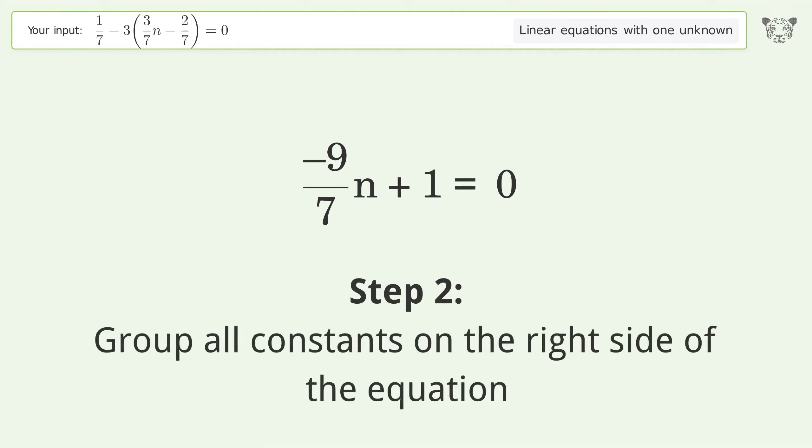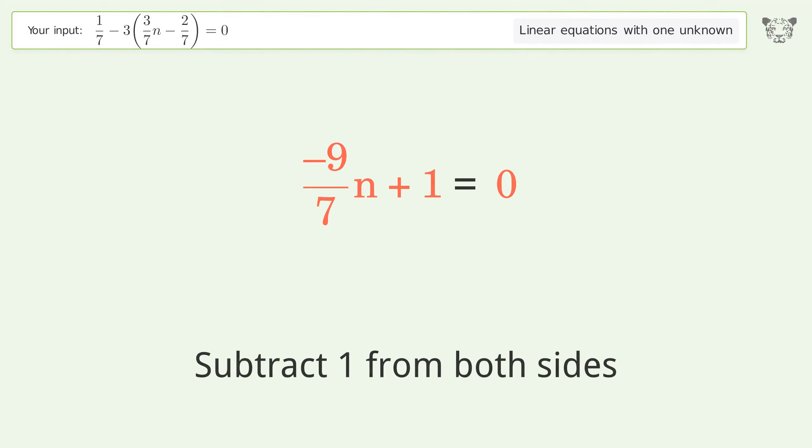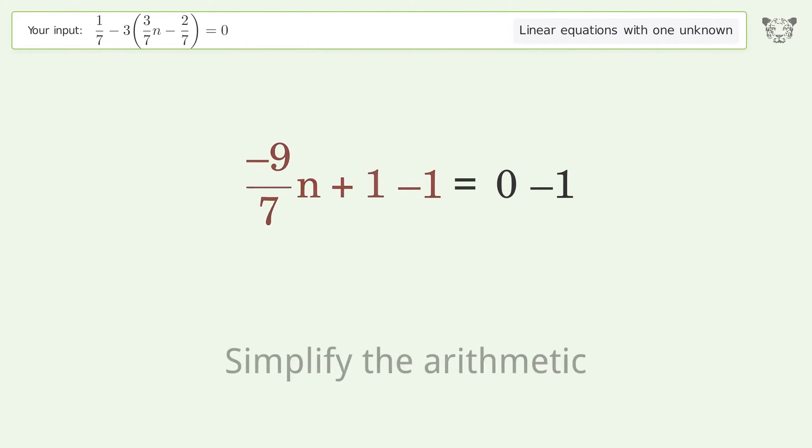Group all constants on the right side of the equation. Subtract 1 from both sides. Simplify the arithmetic.